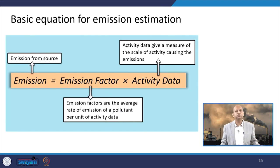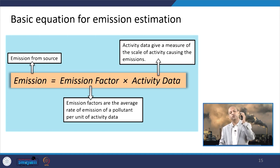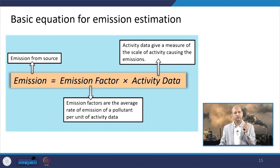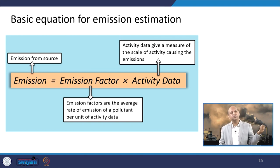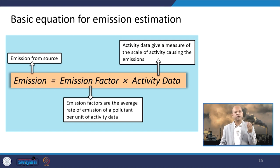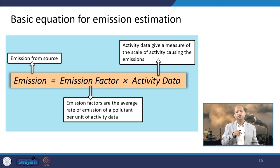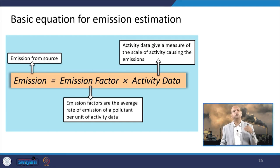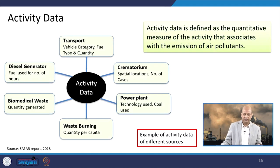The basic equation for emission estimation is very simple: emission equals emission factor multiplied by activity data. The emission factor means, for example, for vehicular emission inventory, when a scooter runs 1 kilometer, how much CO emission is produced — expressed as grams per kilometer or milligrams per kilometer. For power plants, 1 kg of coal burning produces how much emission. You then multiply by the total activity data — for vehicles, how many kilometers per day it runs; for coal burning, how much coal is burnt per day.